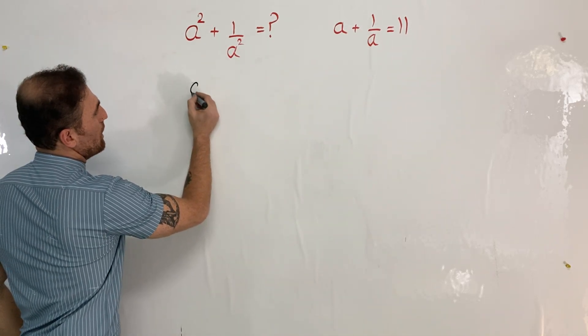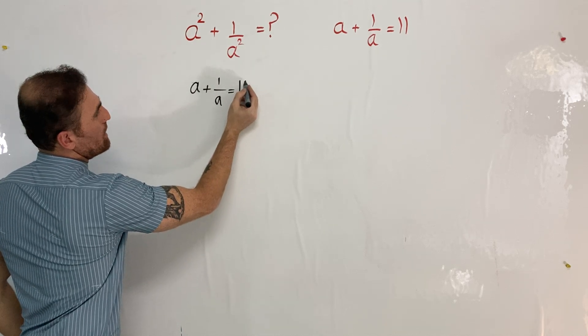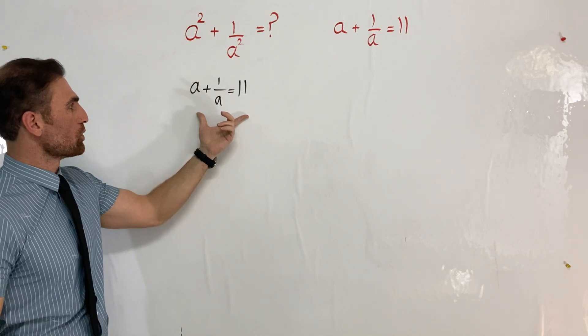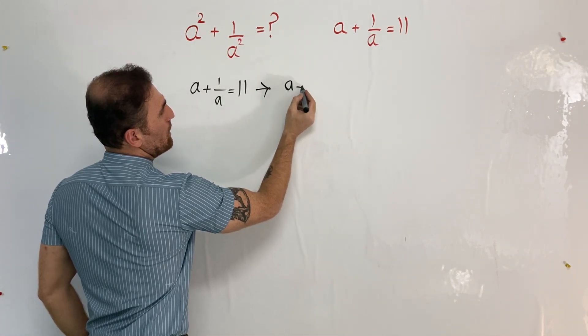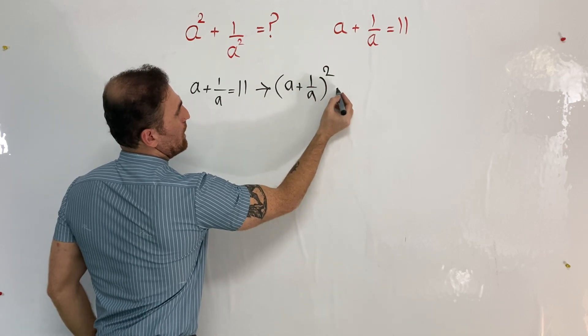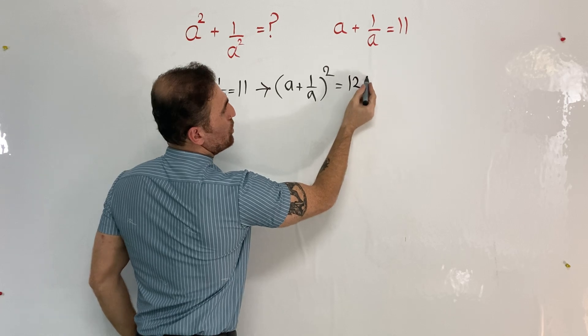So let me rewrite it: a + 1/a = 11. I'll raise both sides to the power of 2, so it's gonna be (a + 1/a)² = 11² = 121.